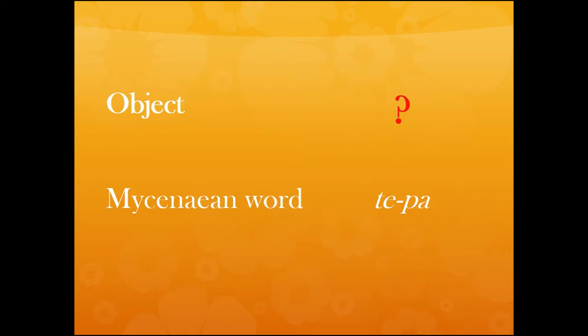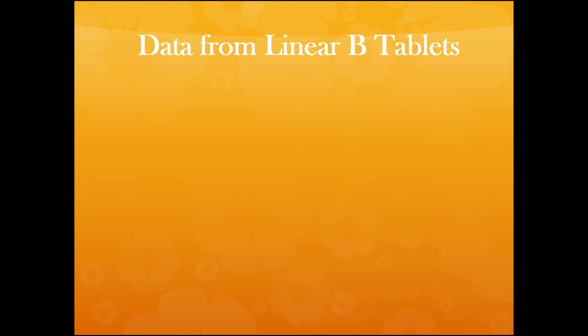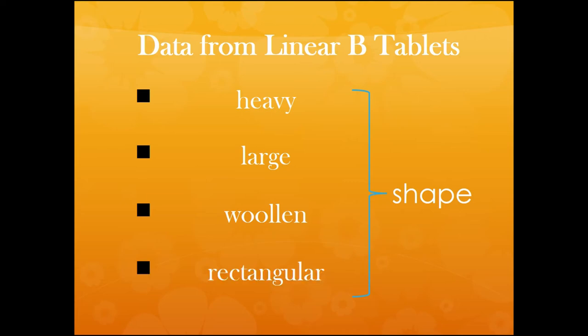So, which is the object referred to by the Mycenaean word tepa and this ligature that we will see? Which kind of data can we have from Linear B tablets? We have contextual data that talk about the shape of this tepa. As far as the shape is concerned, we know that it was a heavy textile, it was large, it was woolen, and it was rectangular. We know that because of the very large amount of sheep wool required to produce this fabric, and rectangular is a deduction made especially on the basis of the shape we will see now.